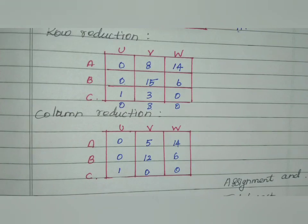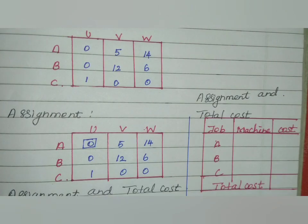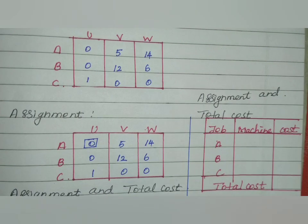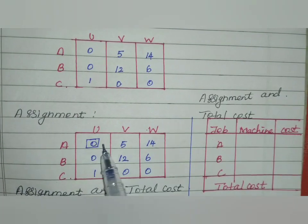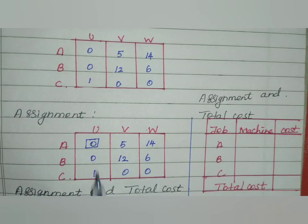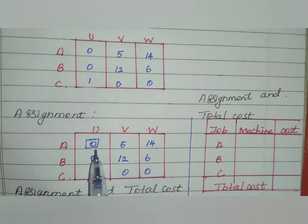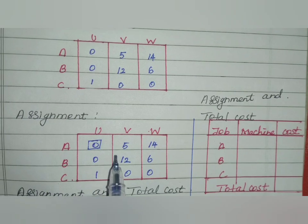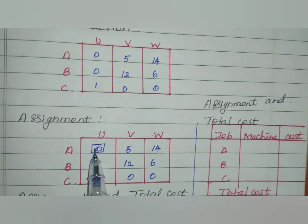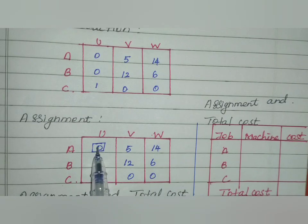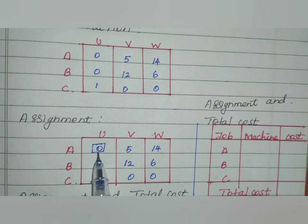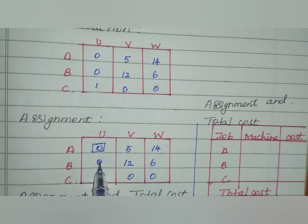Now we do the assignment. When we do the assignment, each row and each column must have at least one zero. In the first row, we have one zero. Looking at this column, we have two zeros.